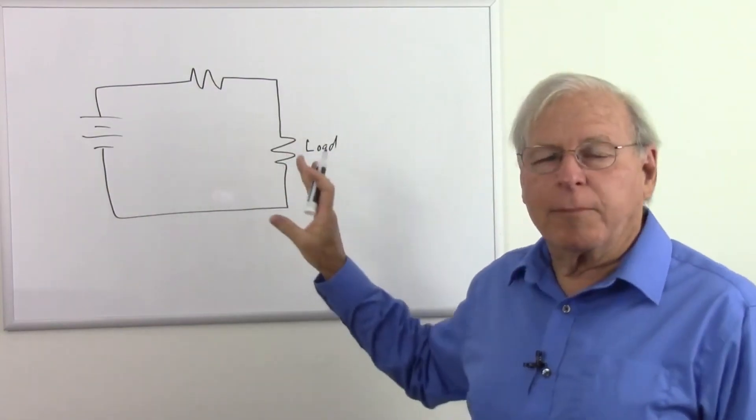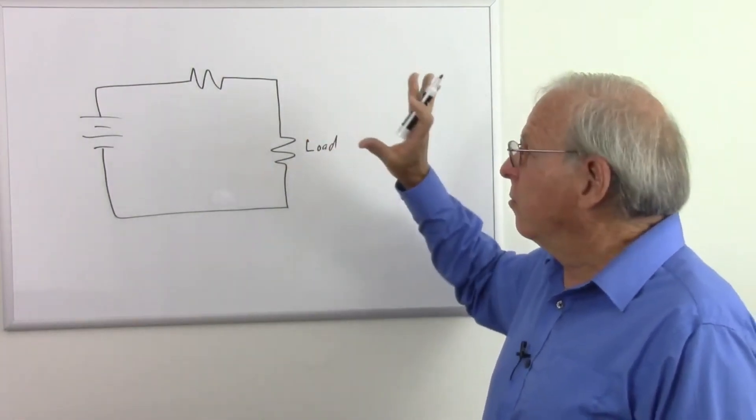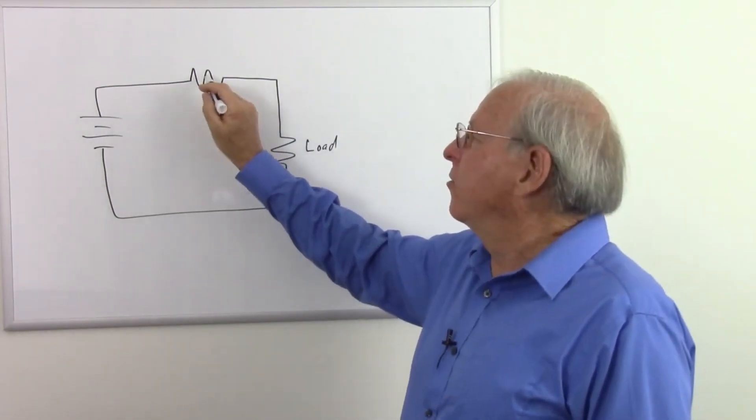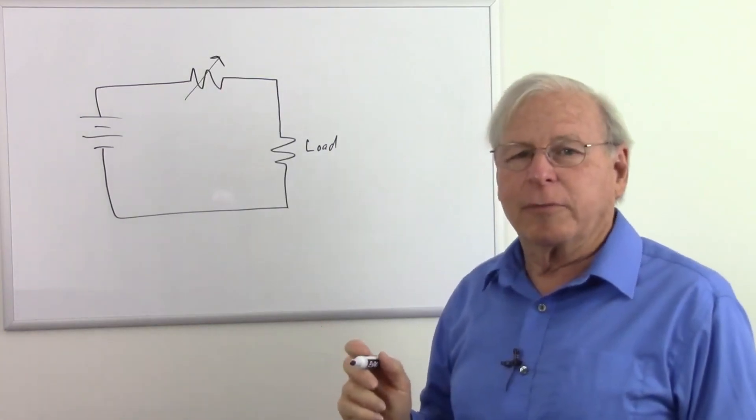So that resistor simply represents whatever circuitry we are running, whether it's a light bulb or a motor or who knows what, and we want to have a variable resistor here. So the symbol for a variable resistor simply puts an arrow through a resistor. Simple enough.